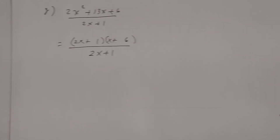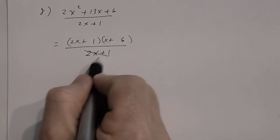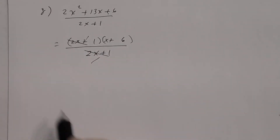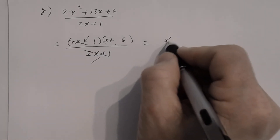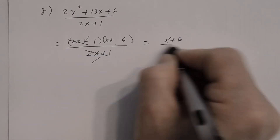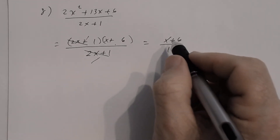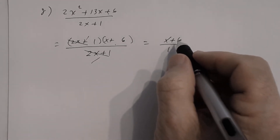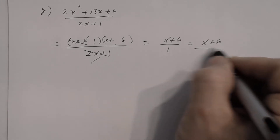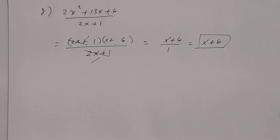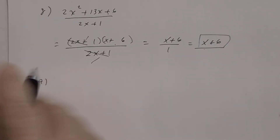Now reduce. The factor (2x + 1) appears in both numerator and denominator, so those divide out. The final answer is x + 6. Remember: x + 6 divided by 1 is just x + 6.